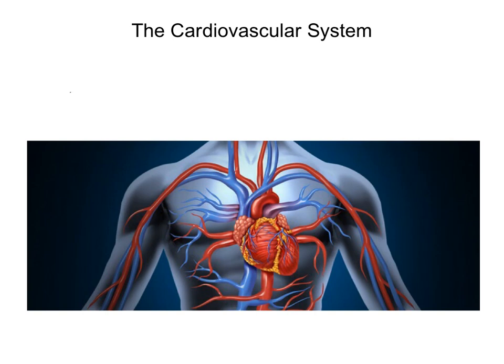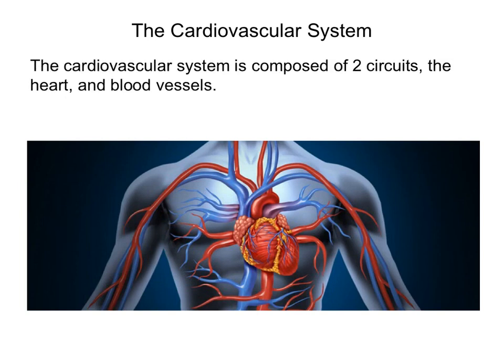For the next set of lectures, we're going to discuss the cardiovascular system. We will discuss the organs and structures of the cardiovascular system, along with how it works. The cardiovascular system is the system responsible for circulating blood to other systems and tissues. It is composed of two circuits, the heart, and blood vessels.